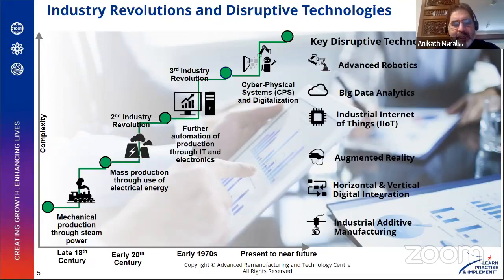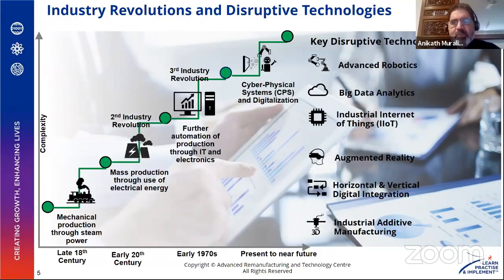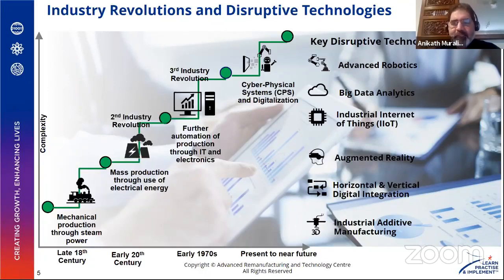Industry 1.0 is assumed to be when steam power allowed the transition from manual operations to steam-assisted work. The second industrial revolution was when electricity came along, along with the ability to mass produce. The third industrial revolution at its heart was automation and electronics — the start of the ability to use computers and automation.